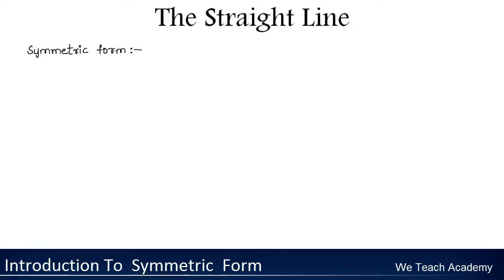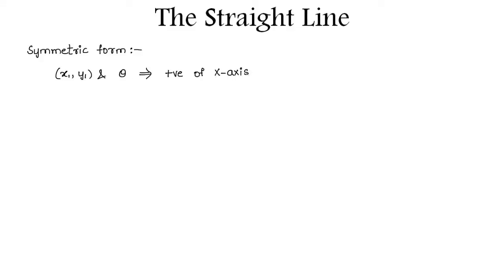So let me give you the definition. The equation of a straight line passing through the point x1 comma y1 and making an angle theta with the positive direction of x-axis is given by the formula: x minus x1 is to cos theta equals y minus y1 is to sin theta.